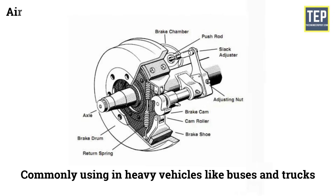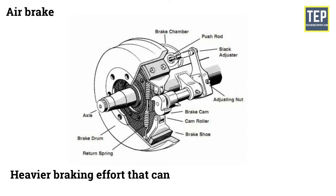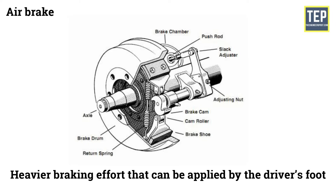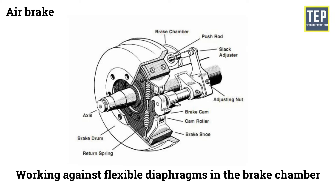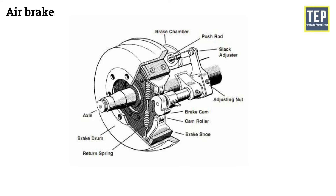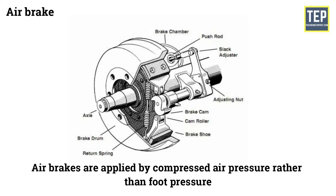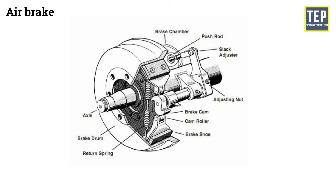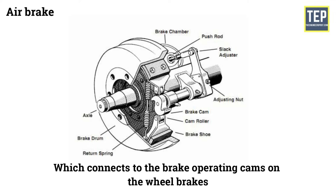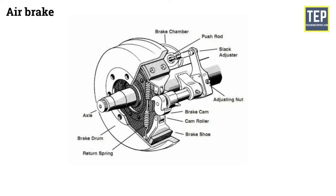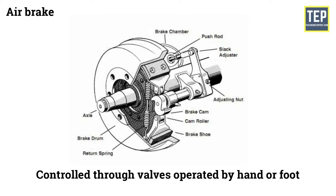Air brakes are commonly used in heavy vehicles like buses and trucks, as they require a heavier braking effort than can be applied by the driver's foot. Working against flexible diaphragms in the brake chamber, air brakes are applied by compressed air pressure rather than foot pressure. The diaphragms are connected to the brake rod, which connects to the brake operating cams on the wheel brakes. These diaphragms are controlled through valves operated by hand or foot.